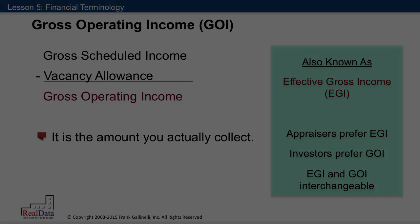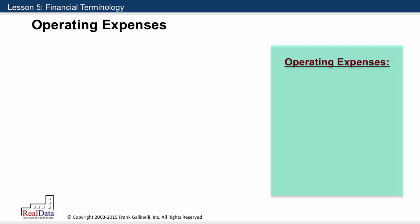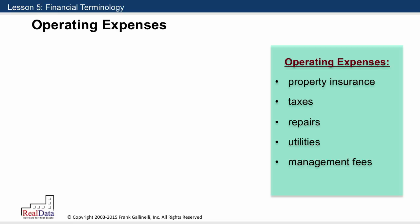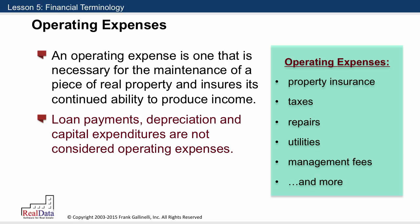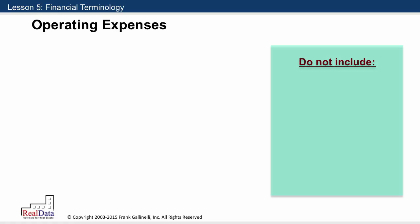The next item, subtracted from gross operating income, is operating expenses — items such as property insurance and taxes, repairs, utilities, and management fees. There is a more or less standard definition: an operating expense is one that is necessary for the maintenance of a piece of real property and ensures its continued ability to produce income. There are opportunities for confusion because some costs we associate with owning property are not necessarily operating expenses. Perhaps the most conspicuous is your mortgage payment, your debt service. You may need a mortgage to acquire a property, but you don't need a mortgage to operate a property — therefore, it's not an operating expense.